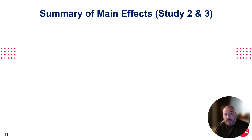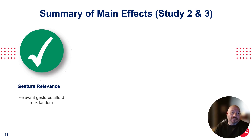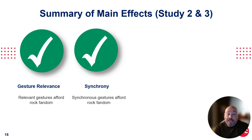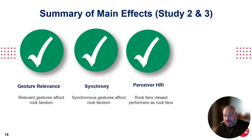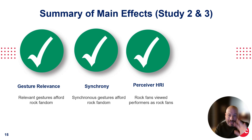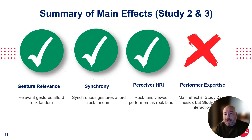Now, the summary. Let's quickly go through the main effects. There was a clear effect of gesture relevance — headbanging clearly affords rock fandom, much stronger than the twist. Synchrony also affords higher rock fandom, though there are some interactions to come back to. And the clearest effect in the study was that the higher the perceiver's rock identity, the more they perceived the movements of the other person as a rock musician — that also had various interactions. The expertise finding was a little more complicated: there was a main effect, but also a bunch of interactions which we need to unpack.